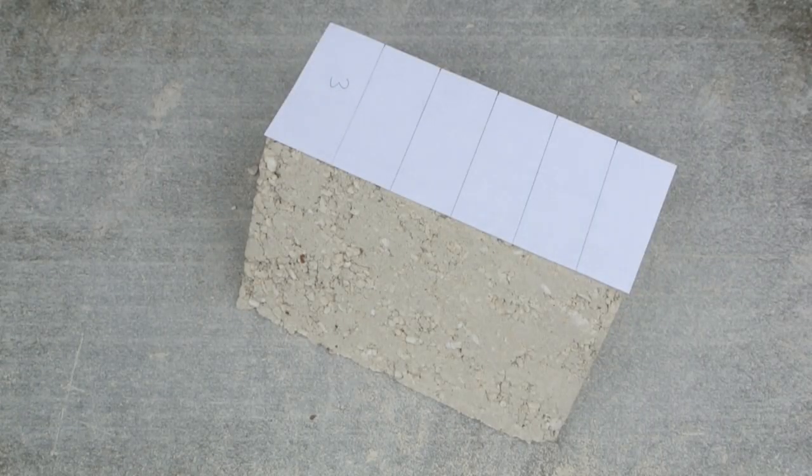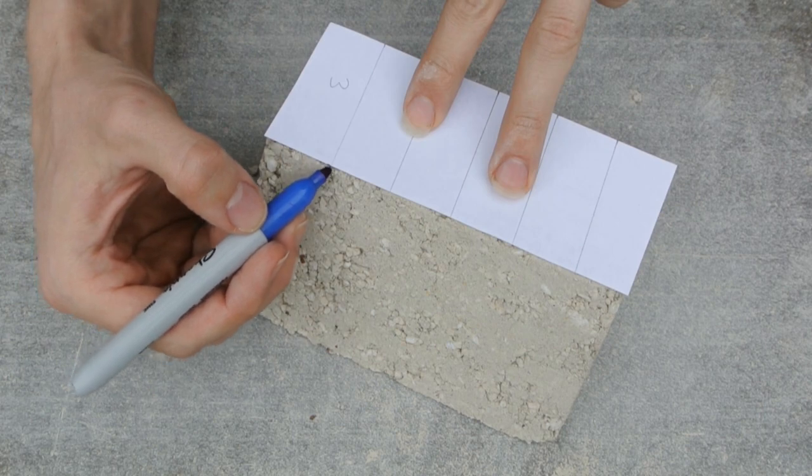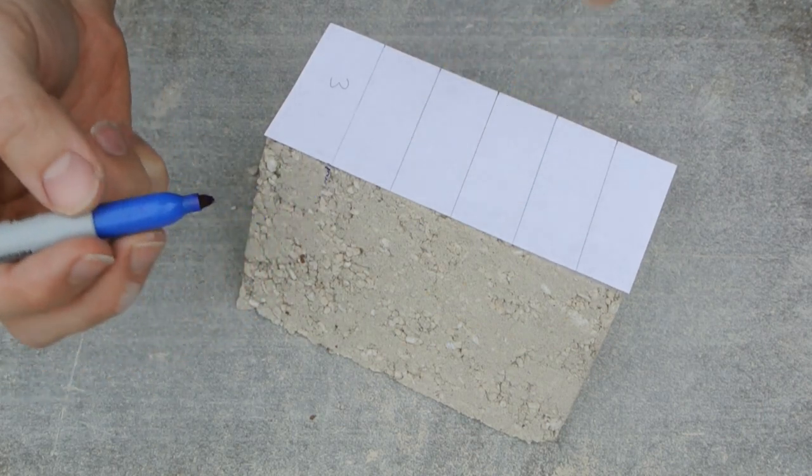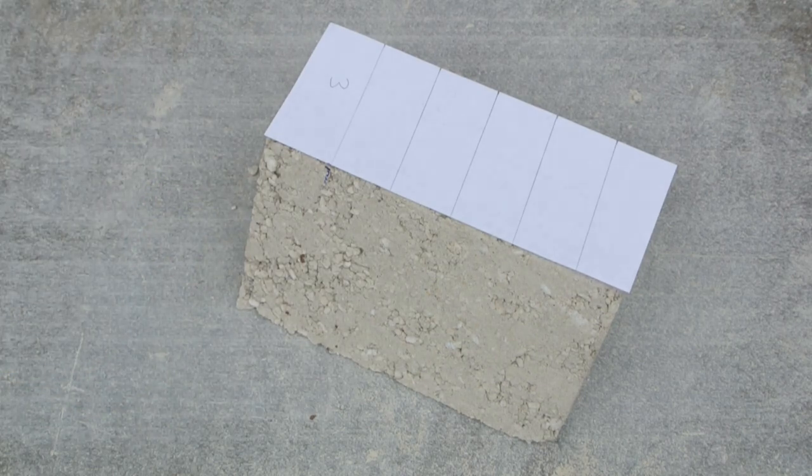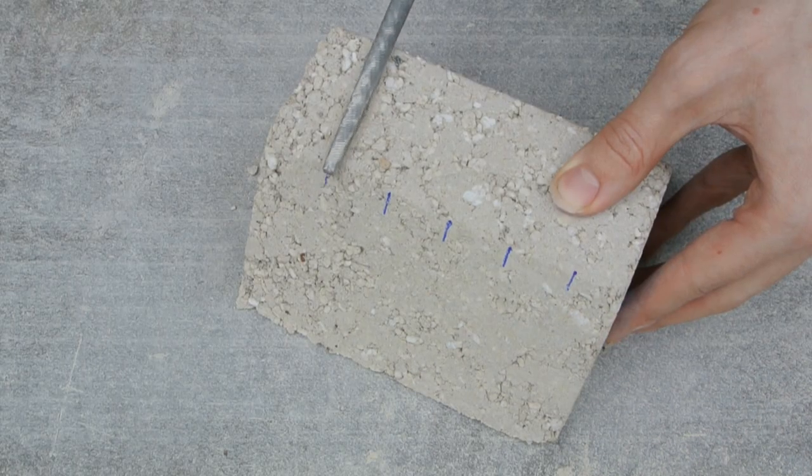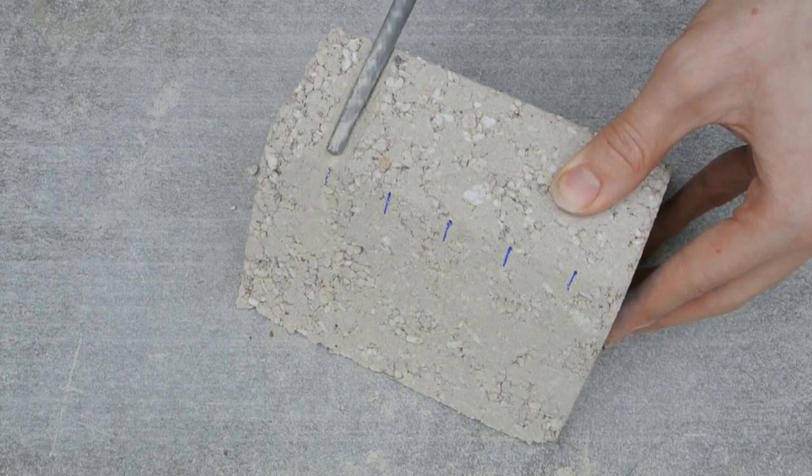After a few weeks had passed and the bricks were dry, I used a paper template to mark the start and end points for the heating element grooves. These were designed to line up as a complete spiral once all six bricks were put together. I used a regular woodworking file to carve out these grooves, and this worked very well.